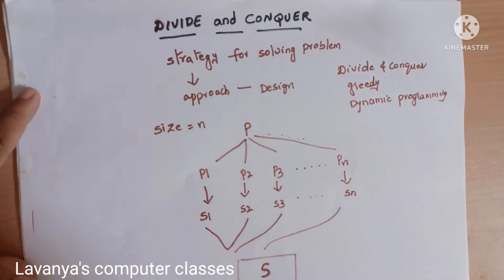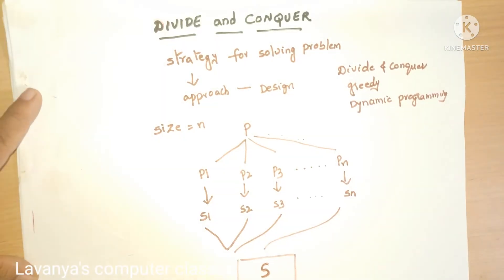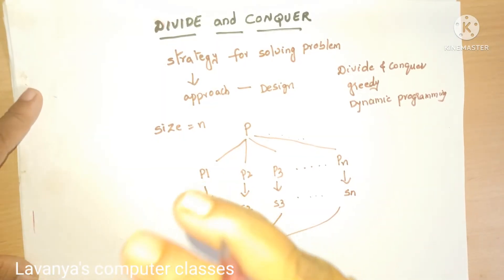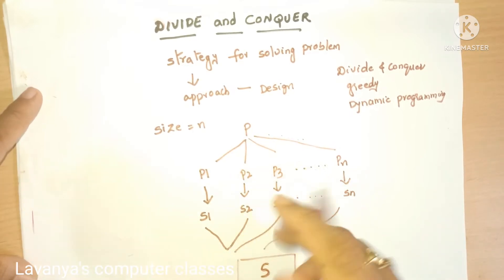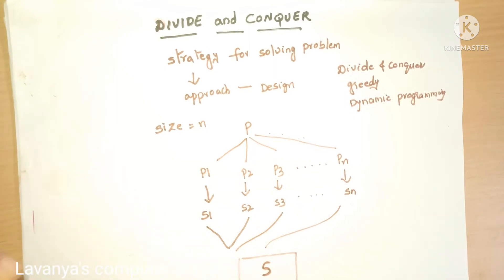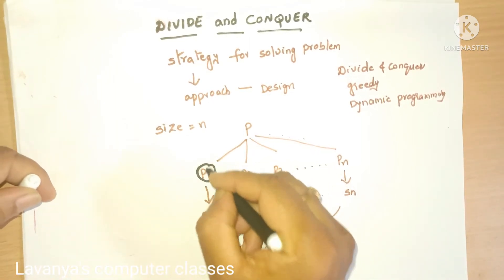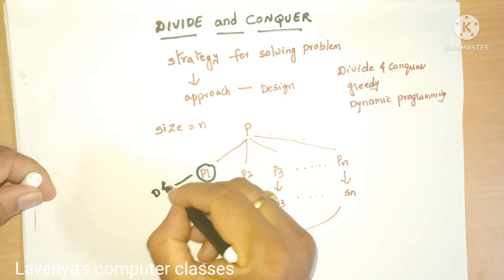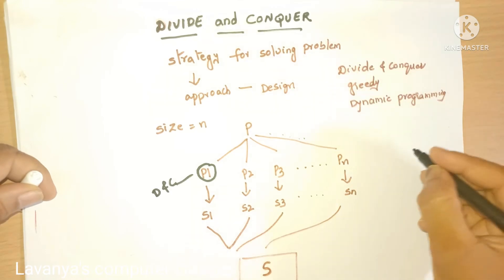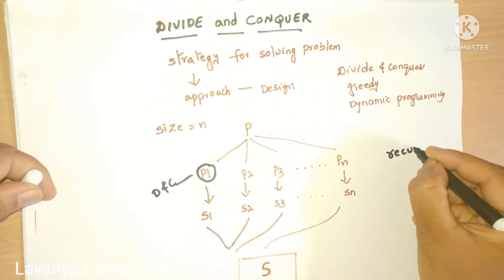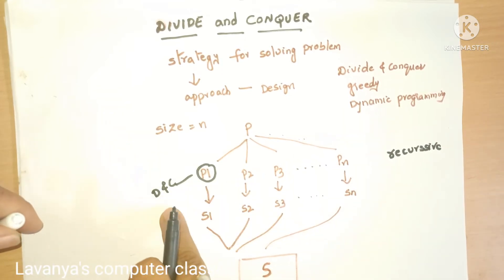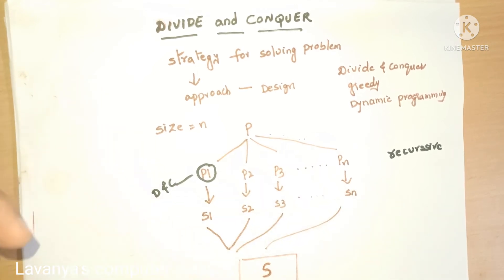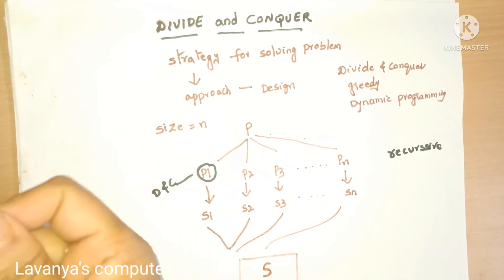Any big problem, if you want to solve it all at once, is very difficult. That is why the problem is divided into smaller and smaller problems — small problems are easy to solve, big problems are very difficult. After dividing, if the sub-problem size is still large, we apply divide and conquer again. That is why divide and conquer is known as a recursive process.